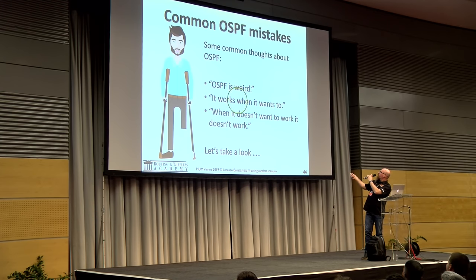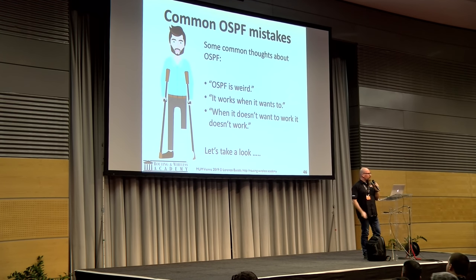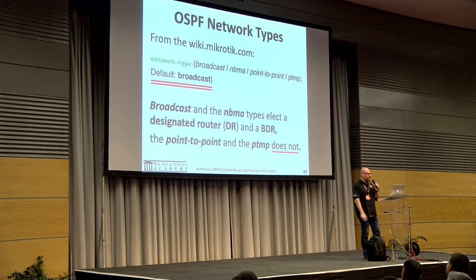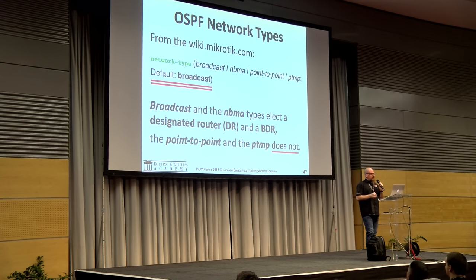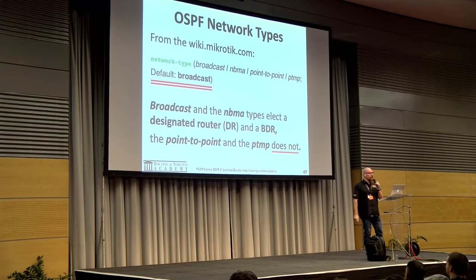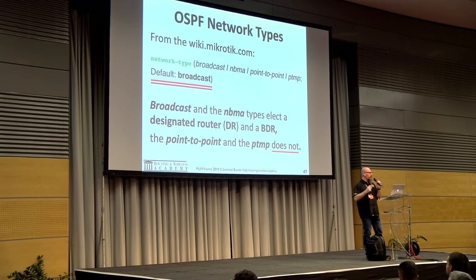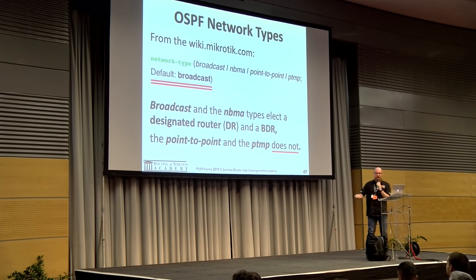OSPF network type is one of the most confusing things in OSPF. According to the wiki, network types can be broadcast, NBMA, point-to-point, and point-to-multipoint. By default, on layer 2 interfaces, the network type is broadcast.